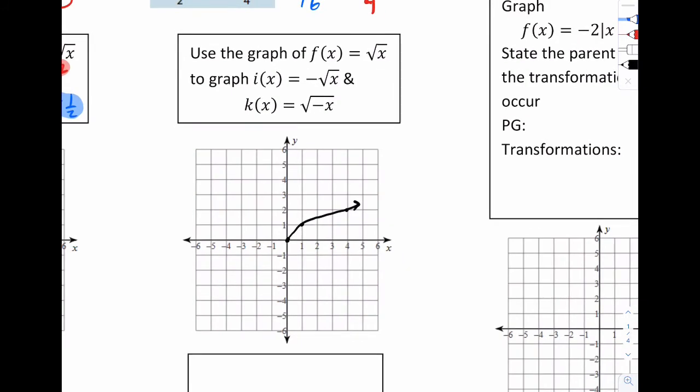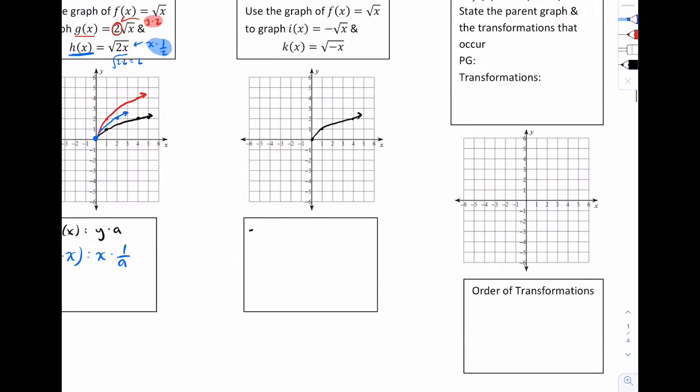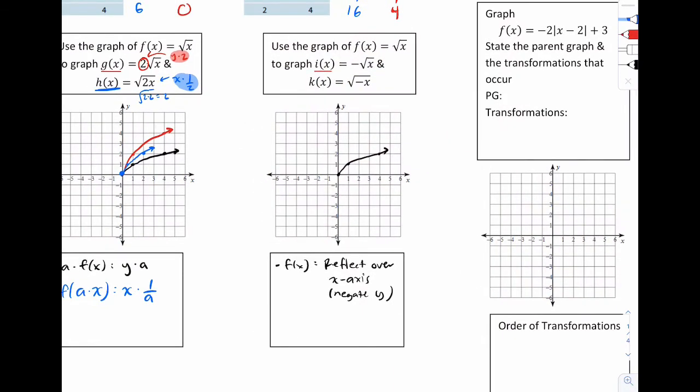And we're going to graph negative root x and root of negative x. So for your notes here, you're going to write negative f(x). What that's going to do is it's going to reflect over the x-axis. And that's because you're going to negate the y values. So for i(x), we'll do that in red. We're simply going to reflect it over the x-axis. So this should look like this.